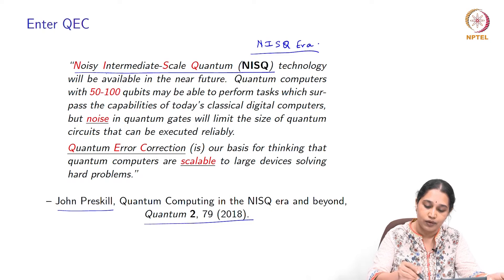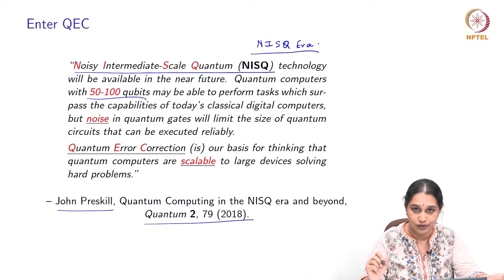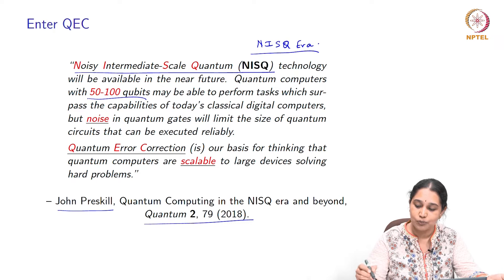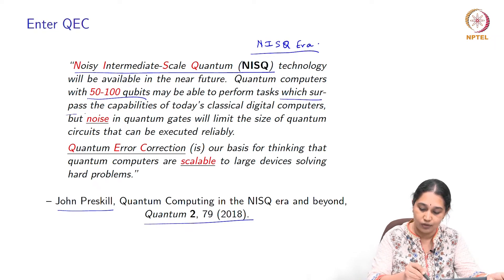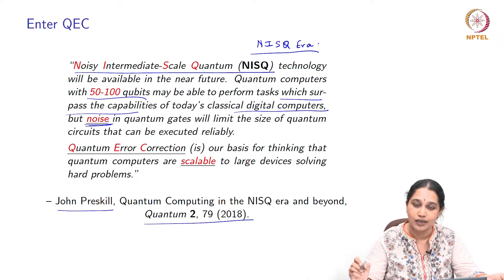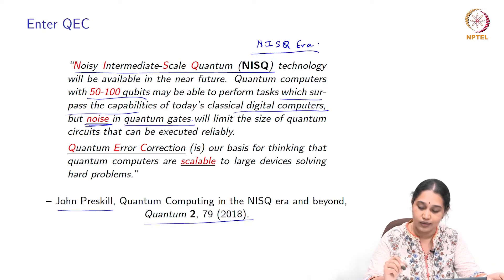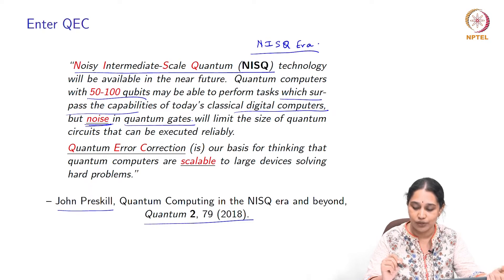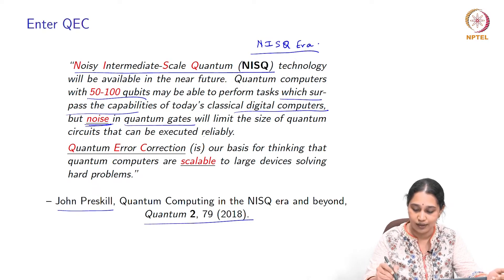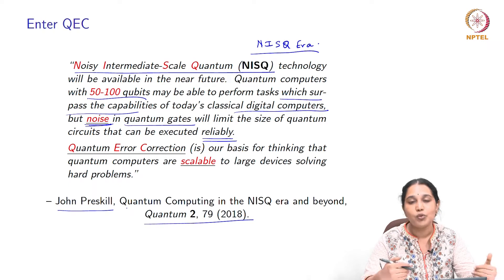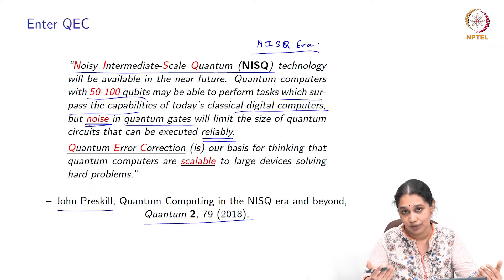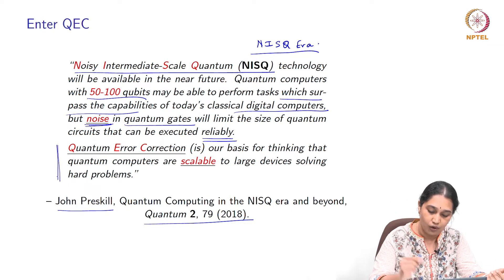On the other hand, what we have are intermediate scale devices with say 50 to 100 qubits. They are indeed able to perform certain tasks which surpass the abilities of classical computers today, but the key limiting factor is noise — noise in quantum gates and also decoherence of the qubits — and this will limit the effective size of quantum circuits that can be executed reliably. Given where we are today, how do we know that this is a technology that is going to scale? The answer comes in the form of quantum error correction — our basis for thinking that quantum computers are indeed scalable to large devices solving hard problems.